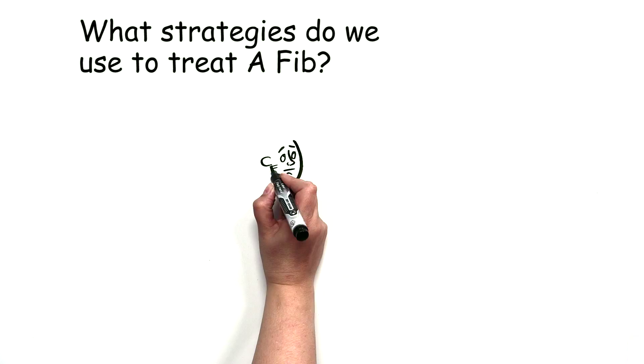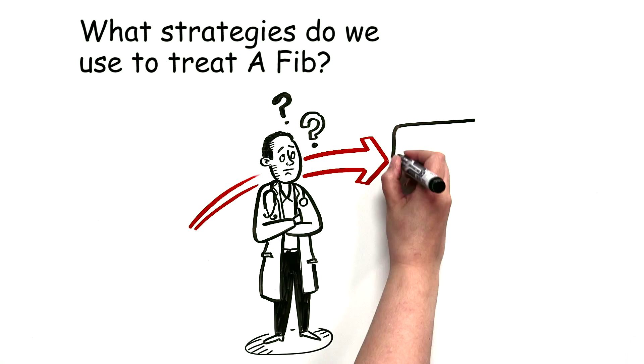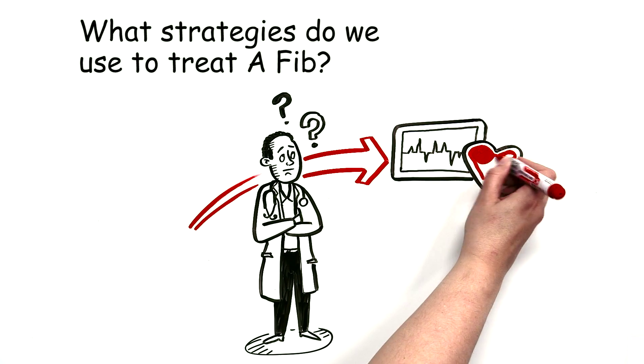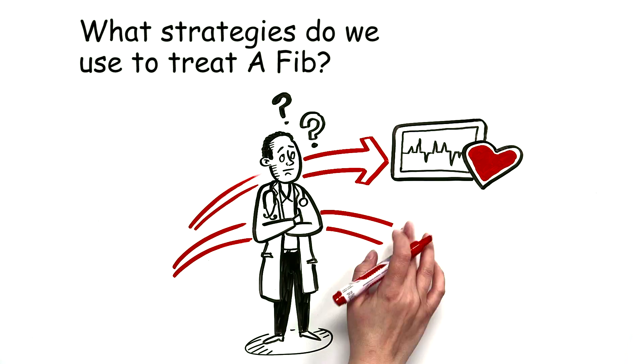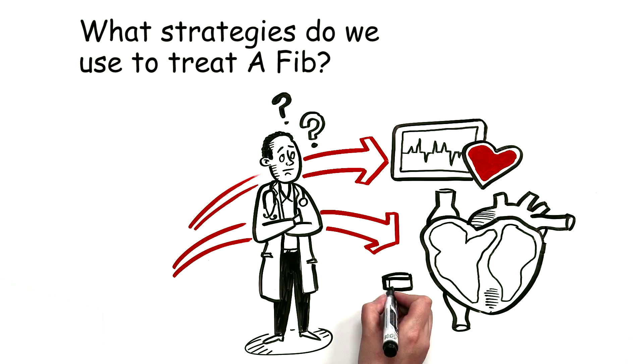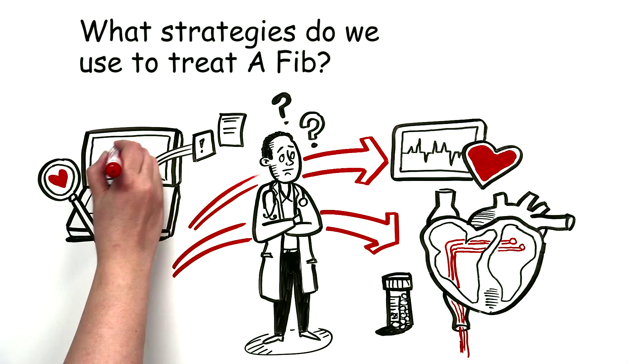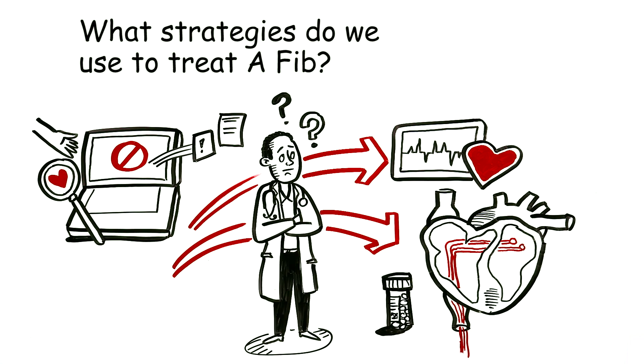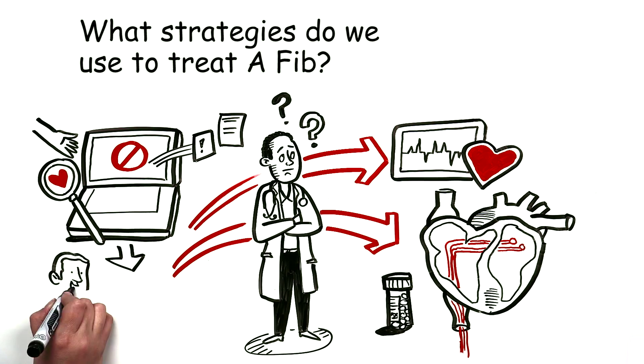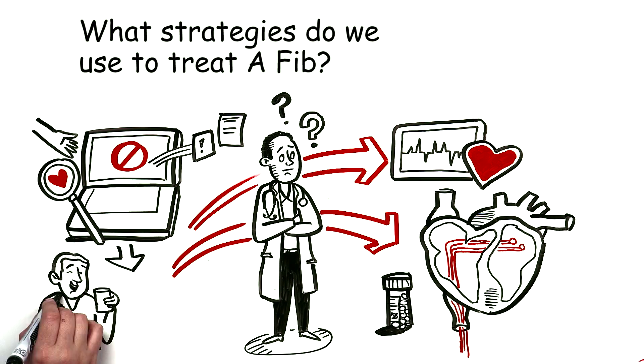What strategies do we use to treat AFib? Rate control, where you simply slow the rate with medications down into the normal range. Rhythm control, where medications and possibly even catheter ablation is used to try to keep them in sinus rhythm. Studies have failed to prove that one strategy is clearly superior to the other, so the decision is largely based on whatever keeps their symptoms under the best control.